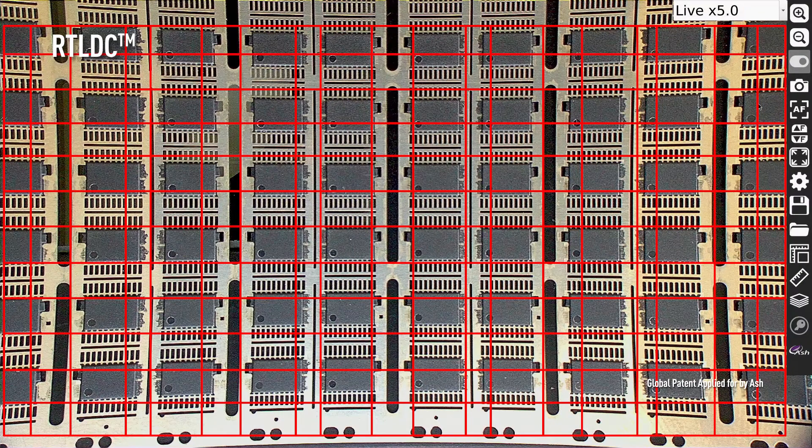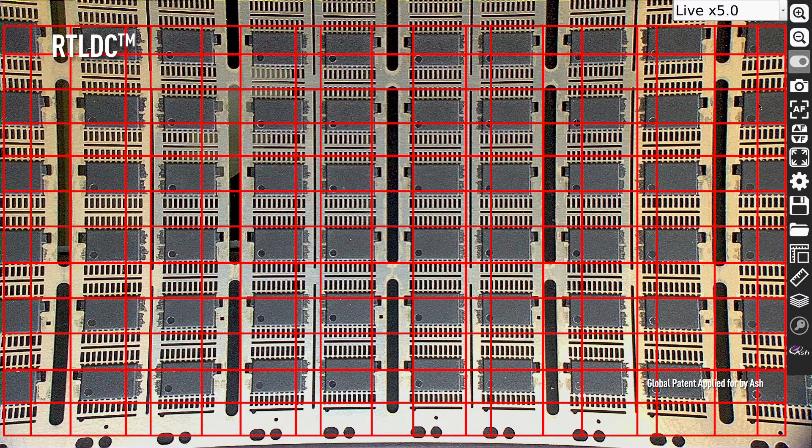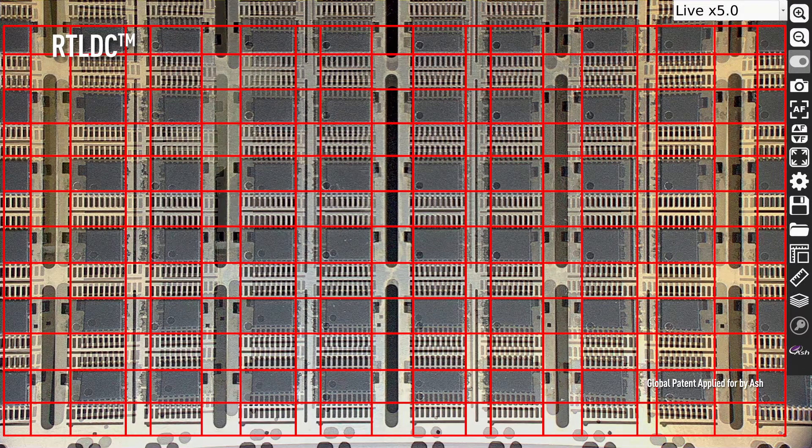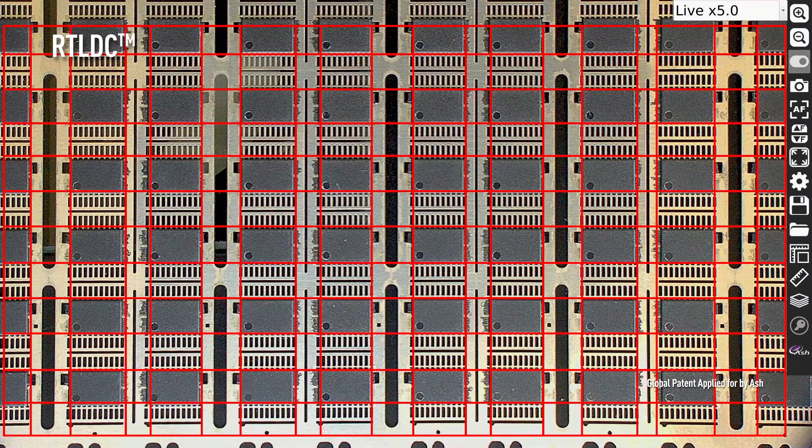The InSpecs 3 incorporates enhanced real-time lens distortion correction, utilizing our new ASHCAM module, allowing inspection of a true representation of your sample.